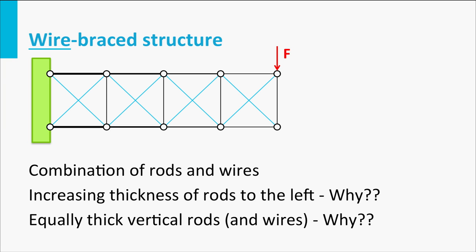As you can see in the figure, the cross-section of the bars increase from right to left, because the bending moment in the structure also increases from right to left. Let me remind you that the bending moment equals force times the length of the arm or distance.